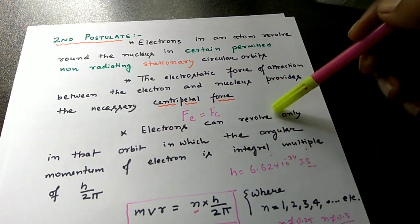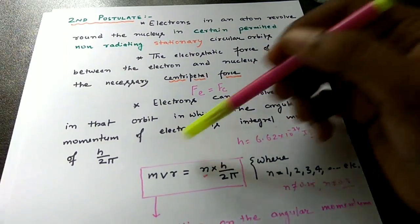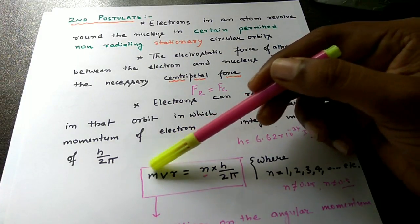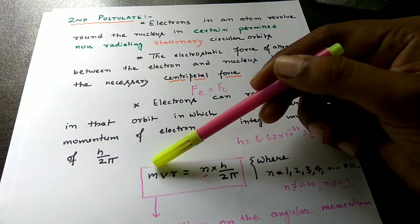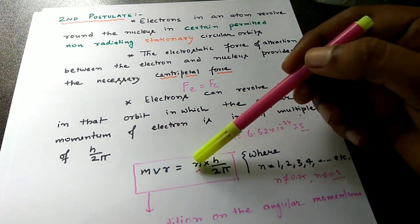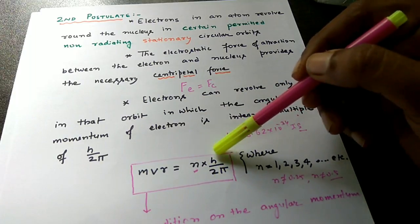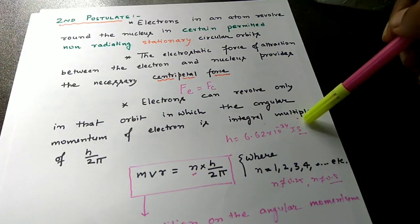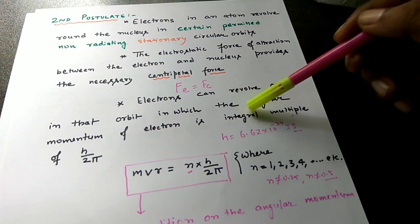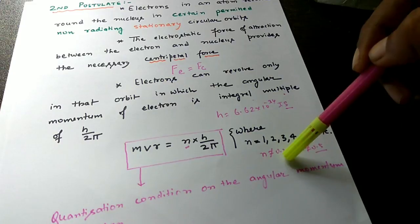Next: an electron can revolve only in that orbit in which the angular momentum of the electron is an integral multiple of h by 2π. The angular momentum is the product of linear momentum mv and the radius r, so mvr equals n times h by 2π. Here n is an integer that can have values 1, 2, 3, 4, and so on. h is Planck's constant with a value of 6.62 × 10⁻³⁴ joule-seconds. n cannot have a fractional value, which is why it is called an integral multiple of h by 2π. This condition is known as the quantization condition on the angular momentum of the electron.